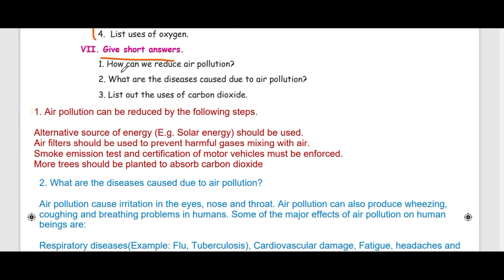How can we reduce air pollution? Air pollution can be reduced by the following steps. Alternative sources of energy should be used. Air filters should be used to prevent harmful gases mixing with air. Smoke emission test and certification of motor vehicles must be enforced. More trees should be planted to absorb carbon dioxide.